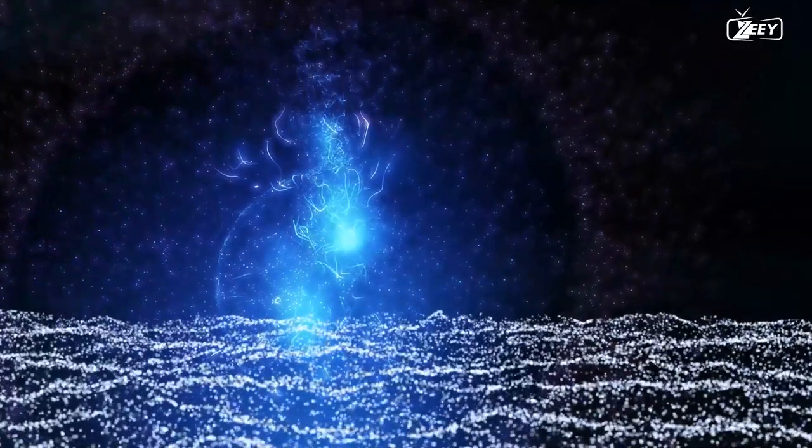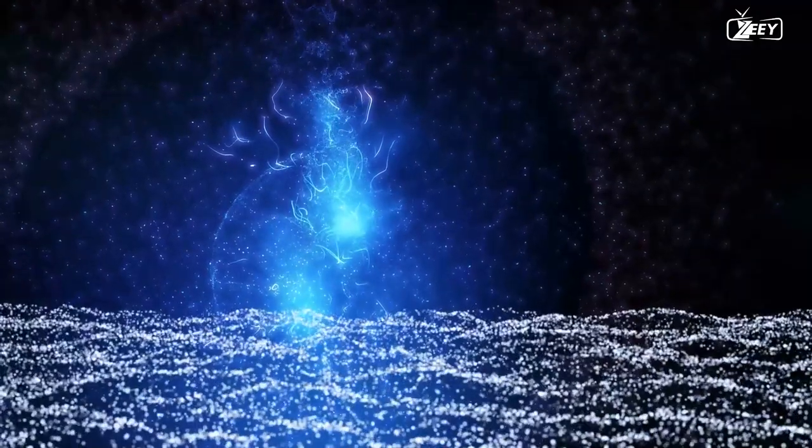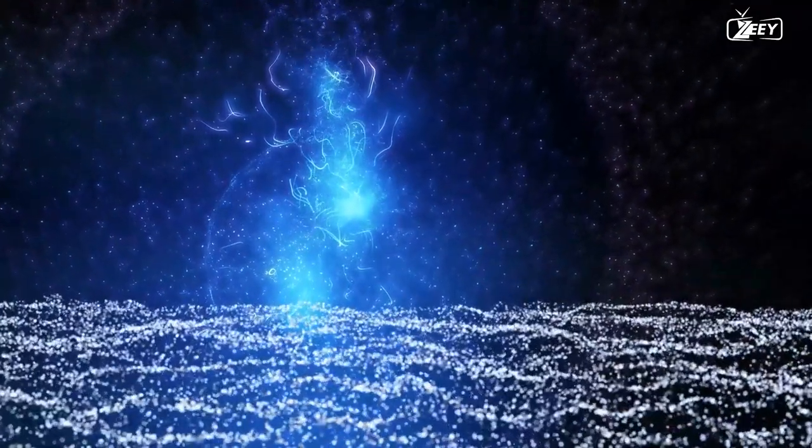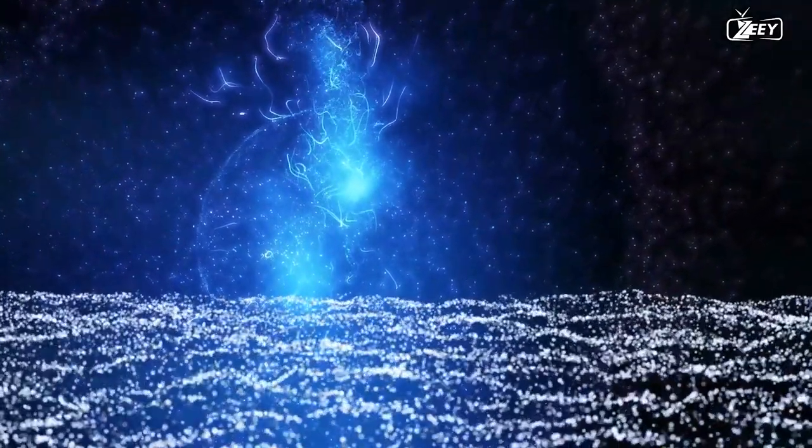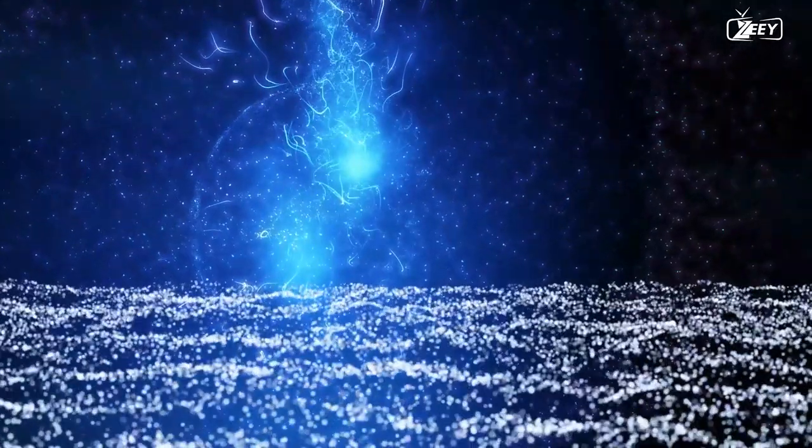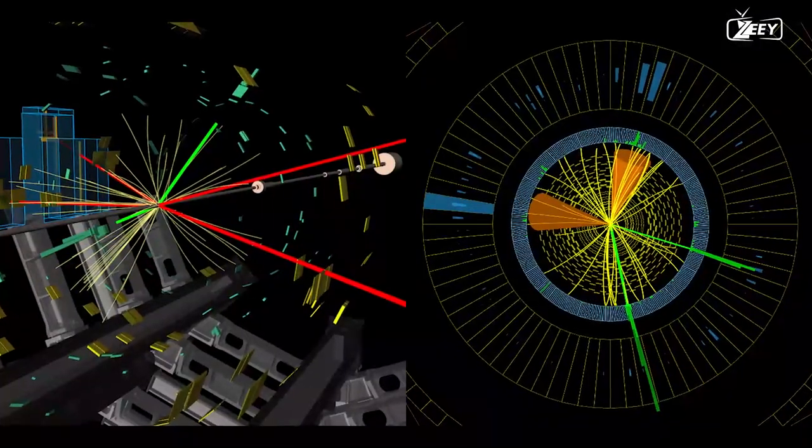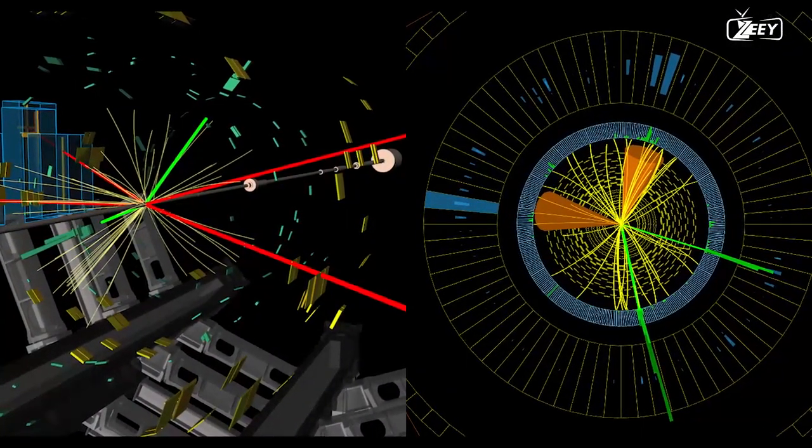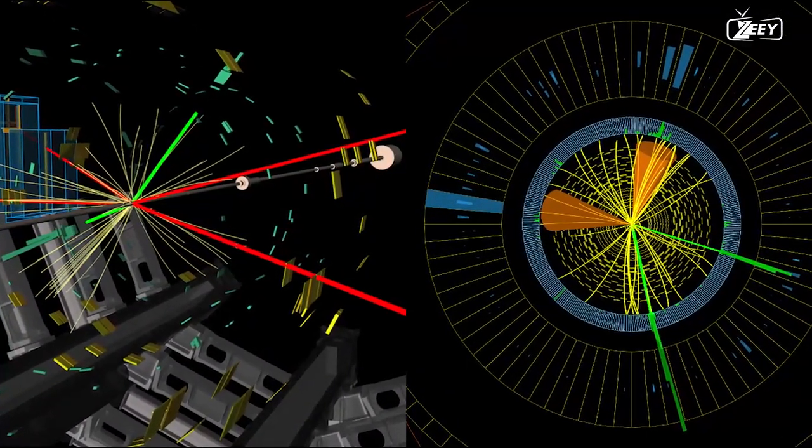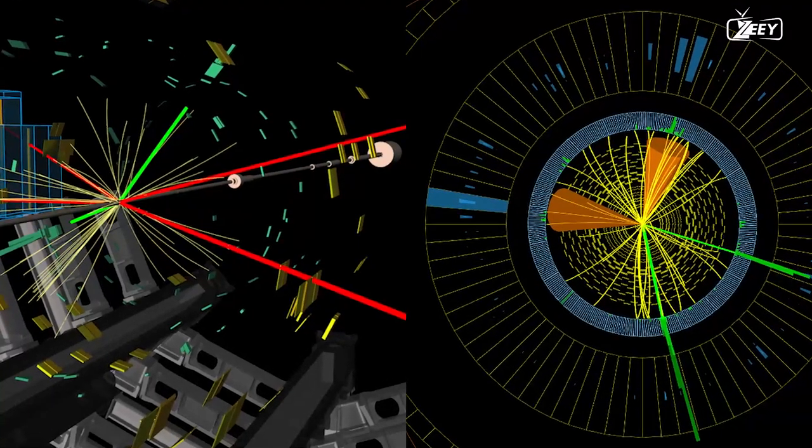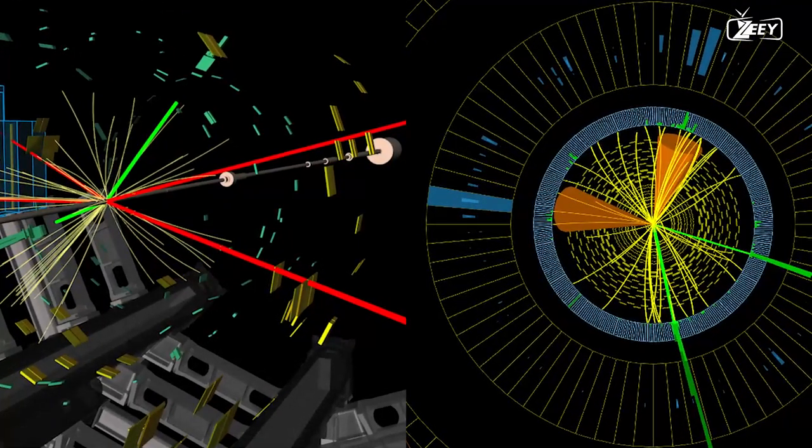The secret is that when the Higgs boson decays, it produces well-known and easily identifiable particles. The Higgs boson, for example, can sometimes decay into two photons. These photons have a very distinct profile since they leave no trace in the tracker, yet they emit a huge amount of light when they strike the calorimeter's crystals.